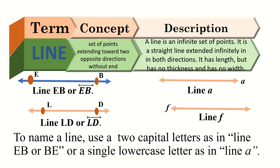Next, we have the line. A line is described as an infinite set of points. It is a straight line extended infinitely in both directions. It has length but has no thickness and no width. To name a line, use two capital letters as in line EB, or with a line symbol above BE, or a single lowercase letter as in line a. For our illustration, we have line EB, line LB, line a, and line f.